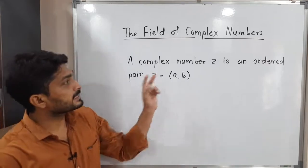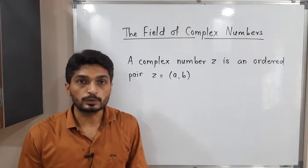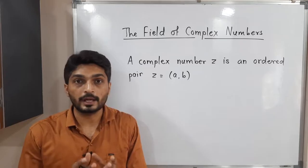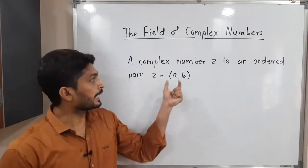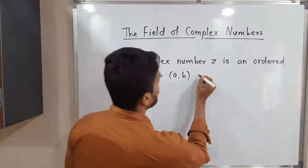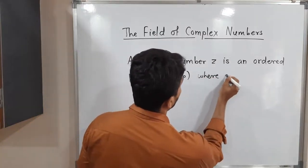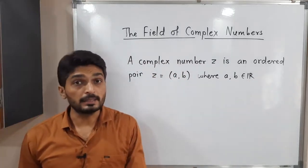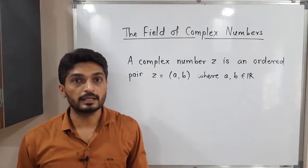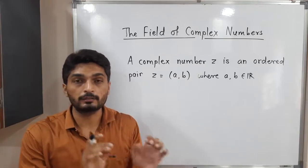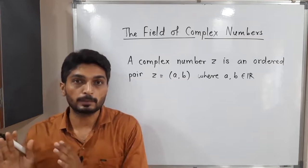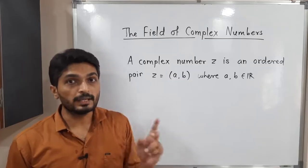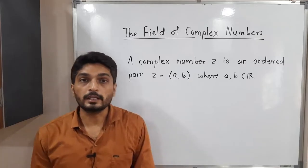A complex number z is an ordered pair. Just now we saw z equals a plus ib, but now we write it as an ordered pair (a, b) where a and b are real numbers. The meaning of an ordered pair is that (a, b) is not the same as (b, a) — it must be in a particular order to represent a particular number. So (b, a) will not be the same as (a, b).